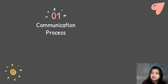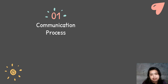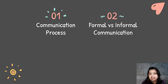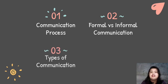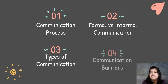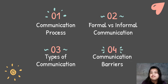Our lesson will be divided into four parts. First, we will talk about the communication process — what is involved in the process of communication. Second, we will compare formal and informal communication. Third, we will cover the different types of communication. And lastly, we will discuss different communication barriers.